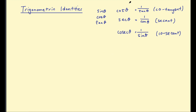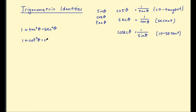There are three identities defining what those functions are. You also need to know that 1 plus tan squared θ equals sec squared θ, and 1 plus cot squared θ equals cosec squared θ.